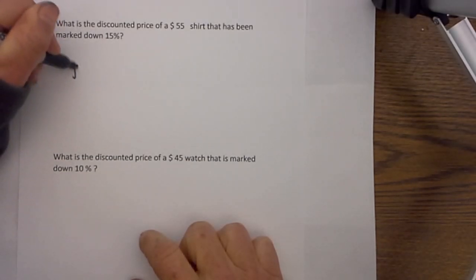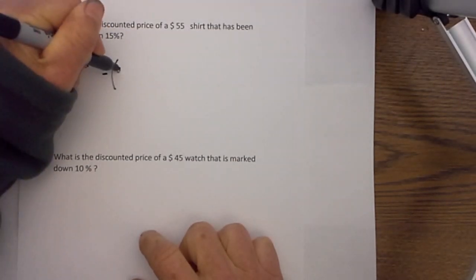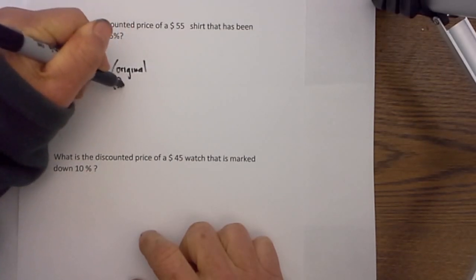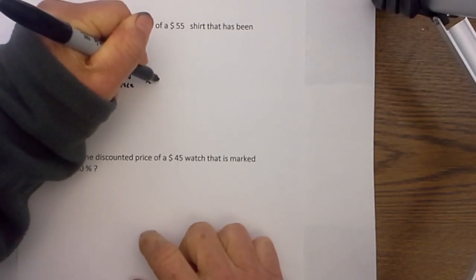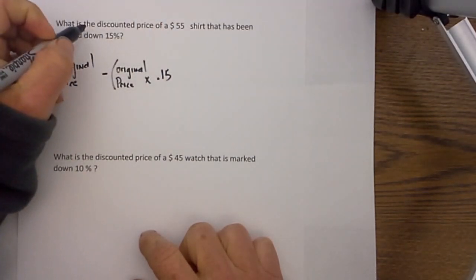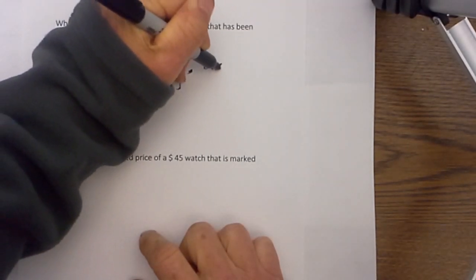You take the original price minus, because a discount means it is less, in parenthesis, the original price times the discount in decimal form. And you know that 15%, just move the decimal two places to the left, will equal your discounted price.